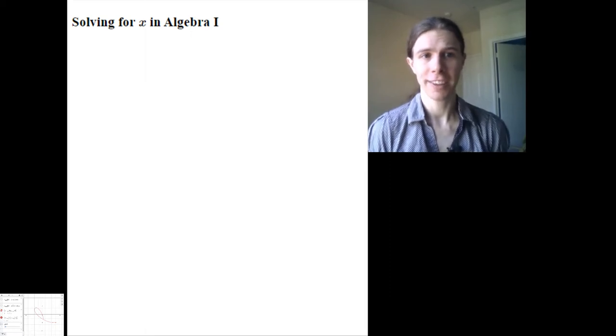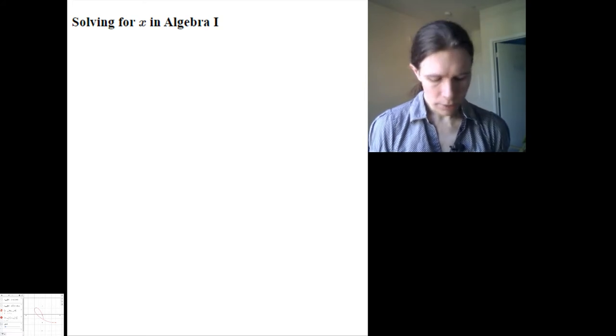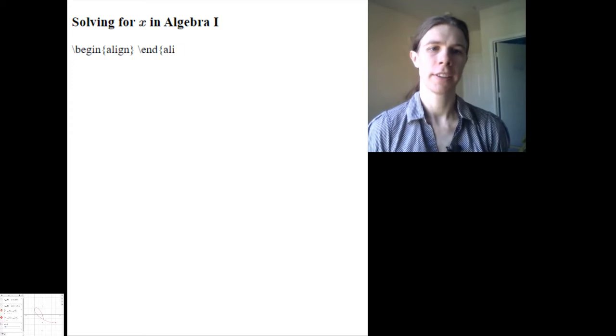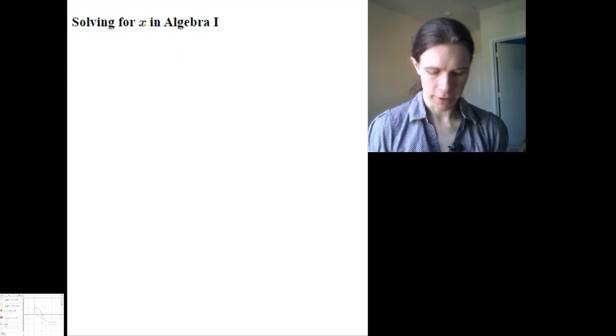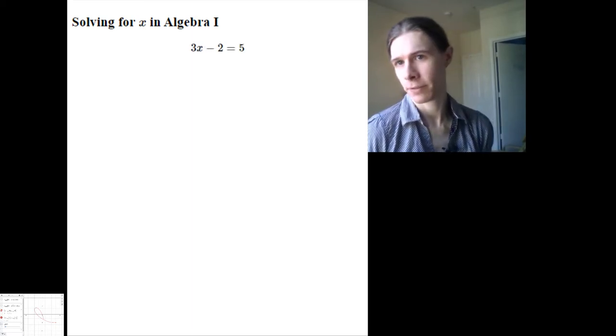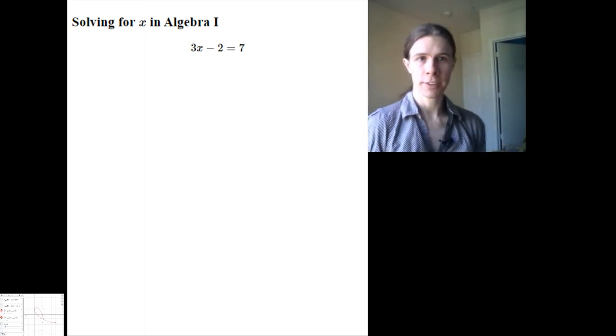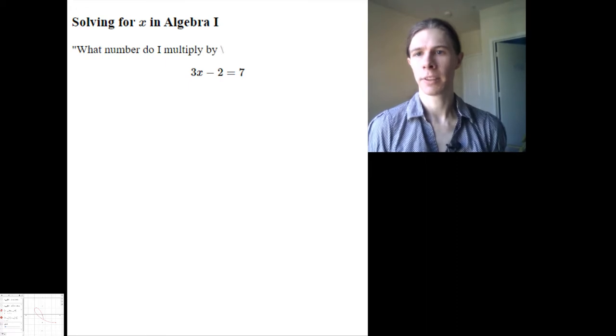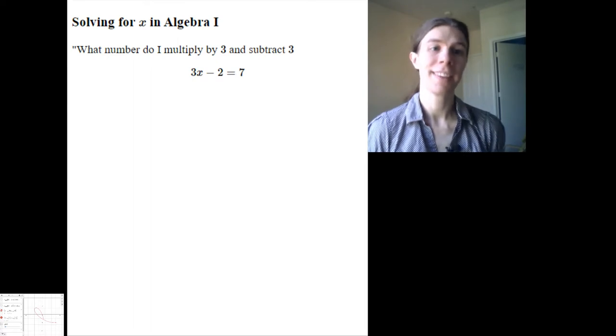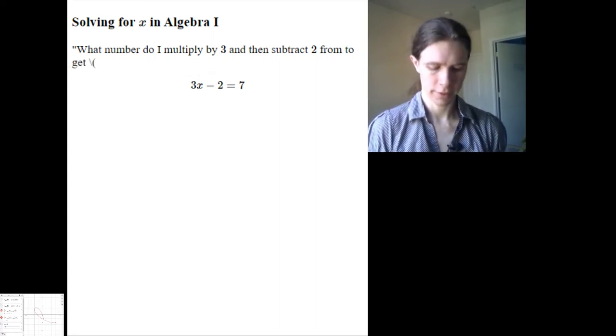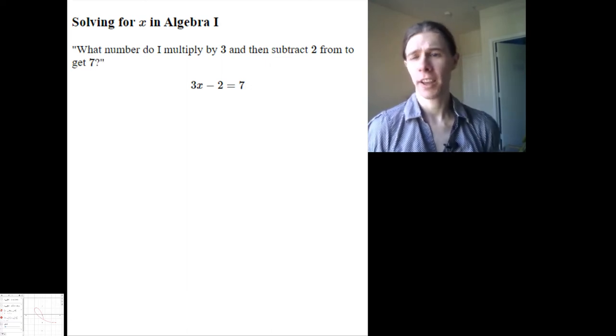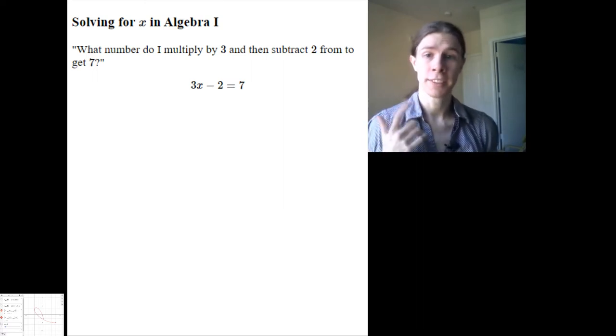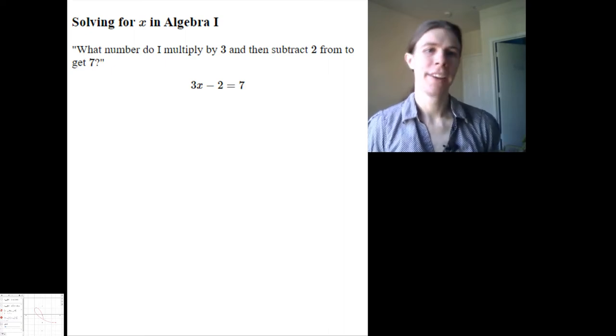So, with that said, let's talk about solving for x. And to be clear, I'm just going to get started here. I'm going to set the frame, and then we're going to come back to it. A typical time you're solving for x in Algebra 1, you're going to have something like 3x minus 2 equals 7, which is really solving the problem: What number do I multiply by 3 and then subtract 2 from to get 7? Or you could think of it as phrased, I have a number, when I multiply it by 3 and subtract 2 from the result, I get 7. What number did I have?